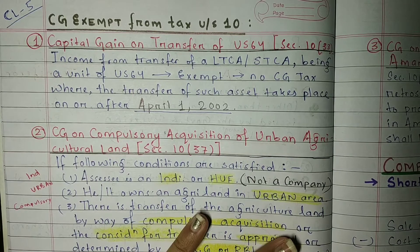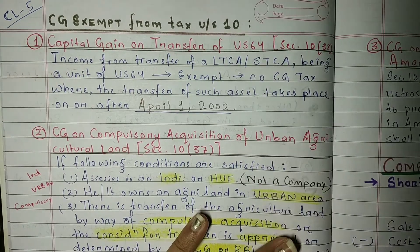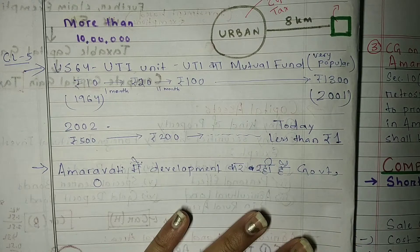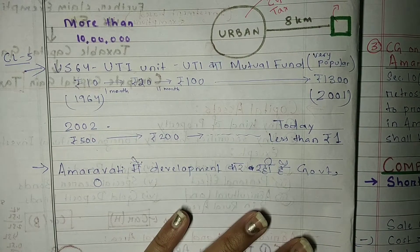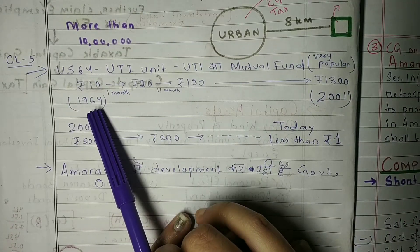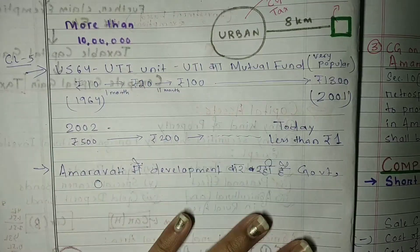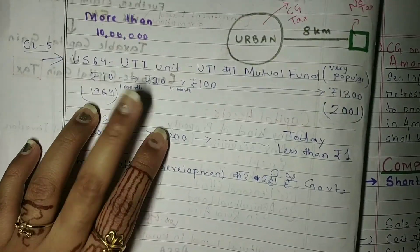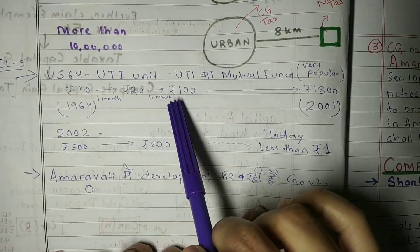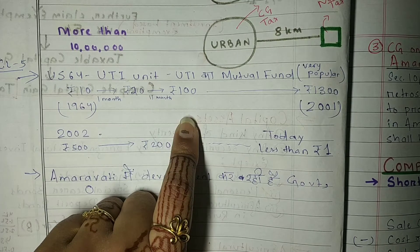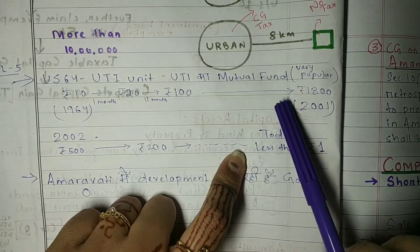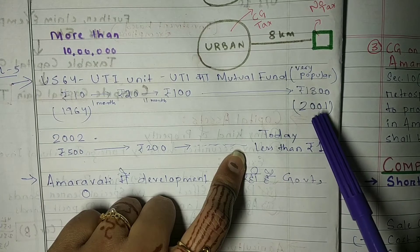We also need to know what US 64 is. US 64 is basically a UTI unit — a mutual fund which was very popular around 2001 to 2005. This scheme was very popular. A US 64 unit which was 10 rupees in one month became 20 rupees, and in the next year became 100 rupees.